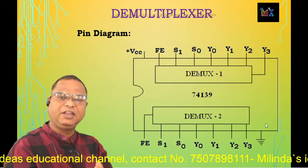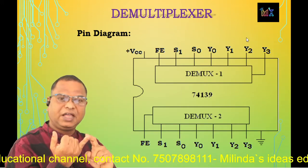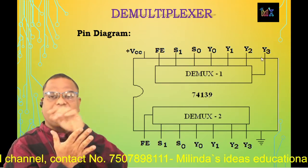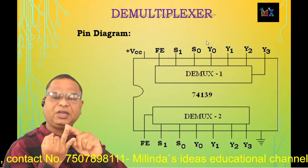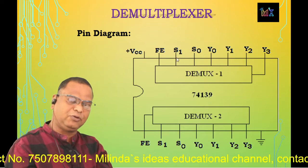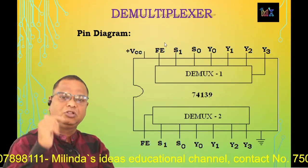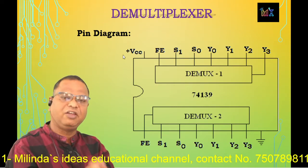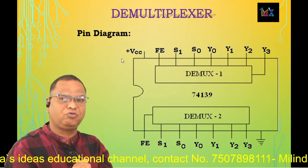Pin 8 is the ground terminal. Pin 9, 10, 11, and 12 are the respective output terminals Y3, Y2, Y1, Y0 of the upper demux. Pins 13 and 14 are the control inputs S0 and S1 respectively of the upper demux. Pin 15 is the strobe input (F̄Ē) of the upper demux, and pin 16 is the VCC supply — plus 5 volts DC should be applied to this terminal.